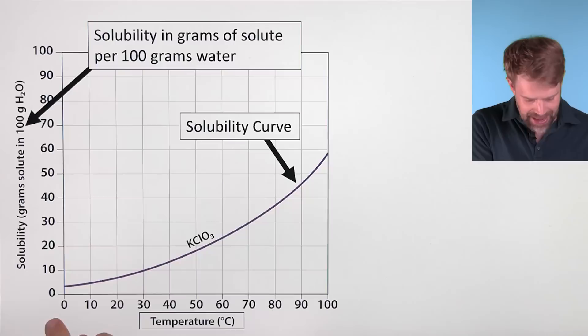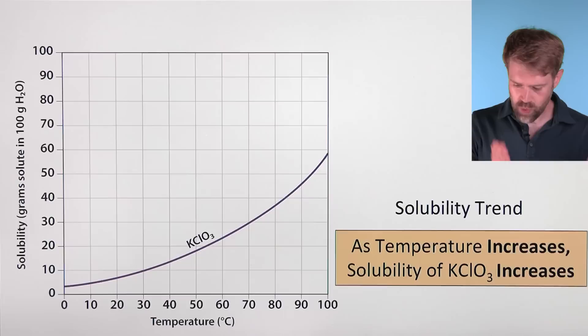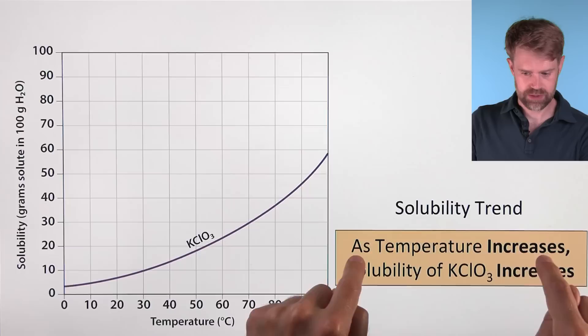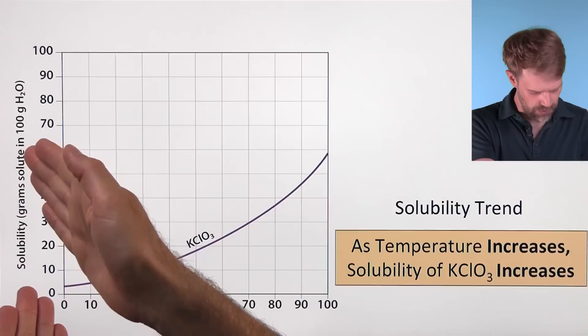First, we can quickly see a trend. For KClO3, as temperature increases, the solubility increases as well. We can also use a solubility curve to get specific numbers for solubility and temperature in different situations.